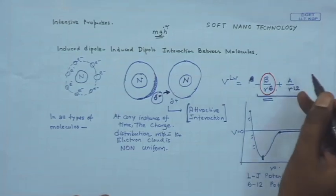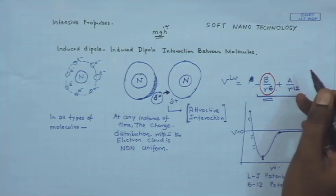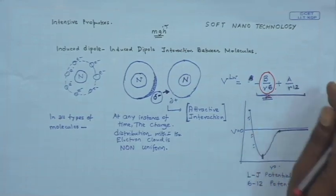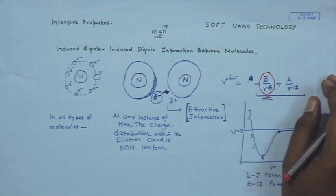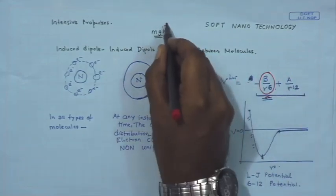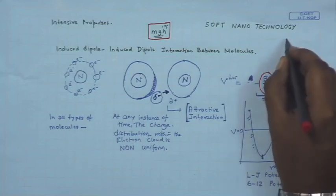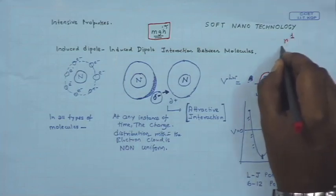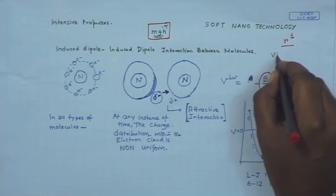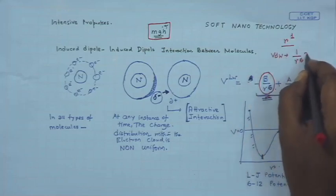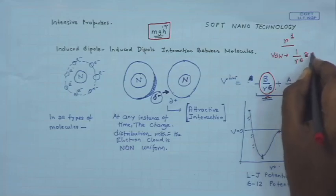From here you can get an idea about what is happening when the dimensions of the system are very very small, because the gravitational field scales as mgh or mgr — it is r to the power 1. In contrast, van der Waals forces scale as 1 by r to the power 6, or r to the power minus 6.